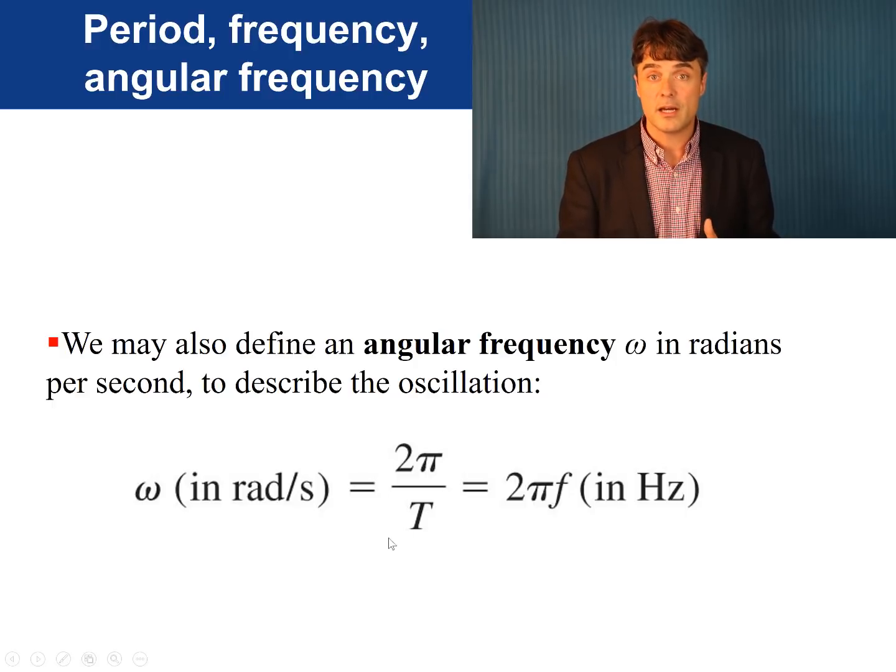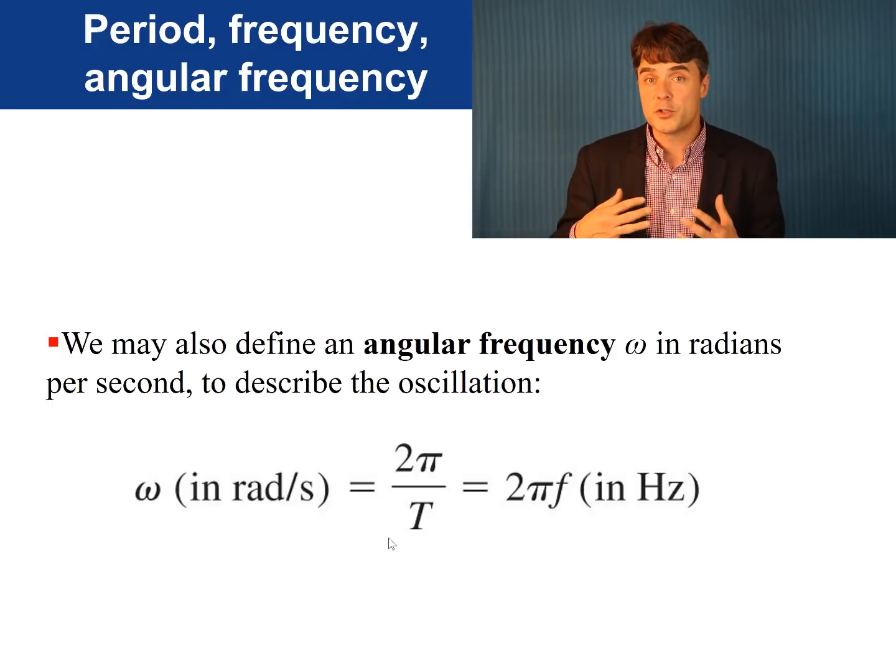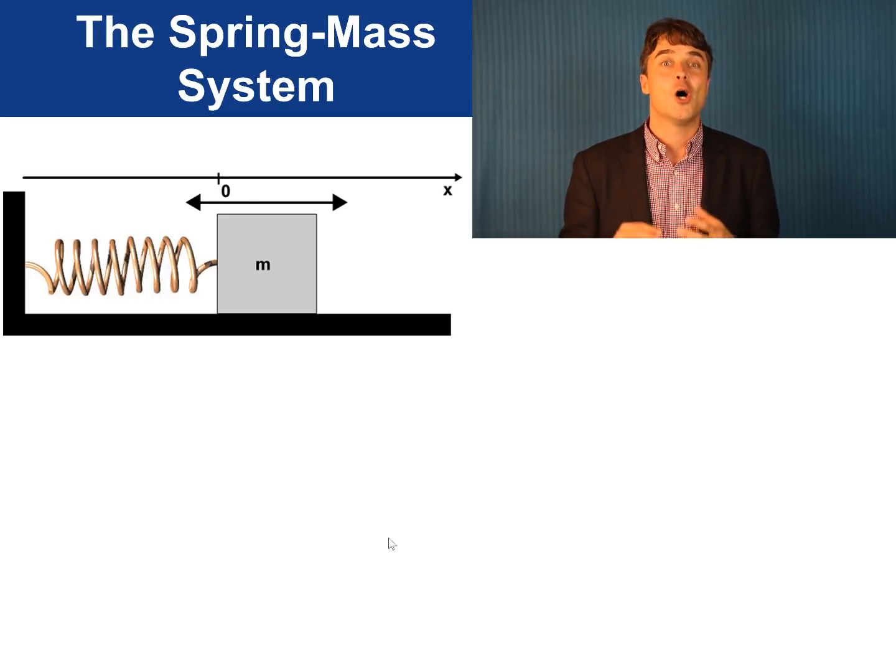The units for omega are radians per second, where a radian, in this case, is not an angle, but it's just 1 over 2 pi of a full cycle.